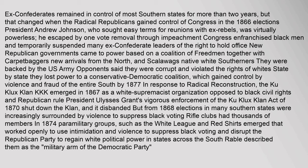Opponents said the Republican governments were corrupt and violated the rights of whites; state by state they lost power to a conservative Democratic coalition, which gained control by violence and fraud of the entire South by 1877. In response to Radical Reconstruction, the Ku Klux Klan emerged in 1867 as a white supremacist organization opposed to black civil rights and Republican rule. President Ulysses Grant's vigorous enforcement of the Ku Klux Klan Act of 1870 shut down the Klan. Paramilitary groups such as the White League and Red Shirts emerged, working openly to suppress black voting and disrupt the Republican Party, described as the military arm of the Democratic Party.